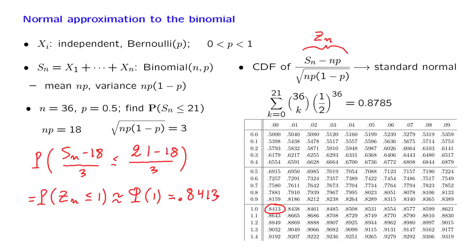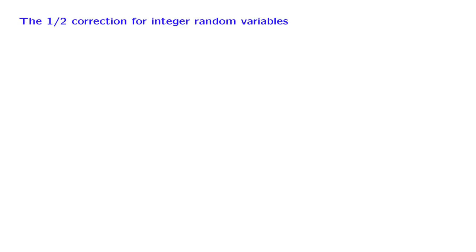This gives us an answer of 0.8413, which is a pretty good approximation of the exact answer of 0.8785. However, it is off by about 4 percentage points. Can we do better than that? It turns out that we can get a better approximation, and let us see how this can be done.